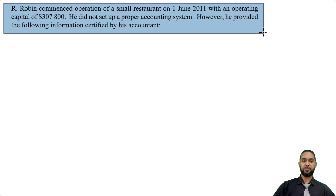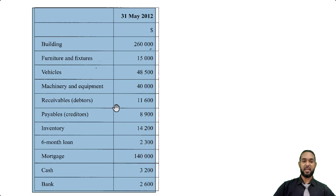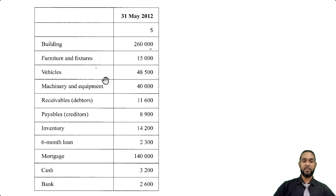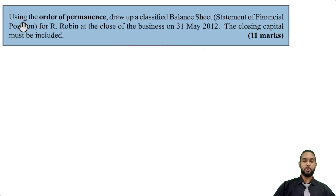Let's take a look at part B. The question reads: R. Robin commenced operation of a small restaurant on 1 June 2011 with an operating capital of $307,800 — operating capital simply means capital. He did not set up a proper accounting system. However, he provided the following information certified by his accountant. We are given a list of balances: building, furniture and fixtures, vehicles, machinery and equipment — those are all your non-current assets — then receivables, payables, inventory, a six-month loan, mortgage, and cash and bank. The question asks us, using the order of permanence, to draw up a classified balance sheet for R. Robin at the close of business on 31st May 2012. The closing capital must be included. That's 11 marks.